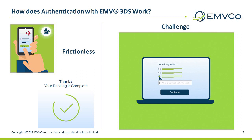The consumer only sees a simple process. For many transactions, they simply click or tap online and the payment is approved. For some transactions, the issuer may determine that further authentication is needed — for example, because of an unusual purchase pattern that does not fit with the consumer profile, or a high-value monetary transaction, or because it is required by legislation such as the Revised Payment Services Directive and its associated strong customer authentication in Europe. In these cases, consumers are prompted to authenticate themselves using a one-time passcode, knowledge-based questions, biometrics, or other methods.